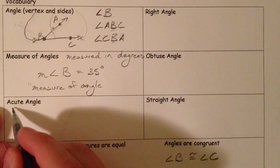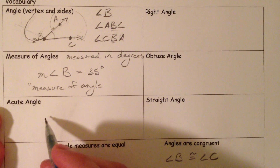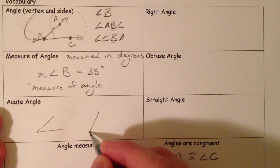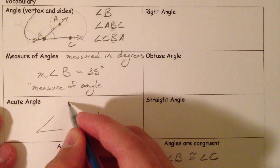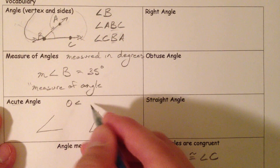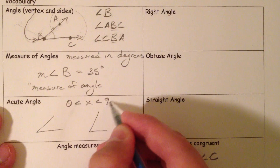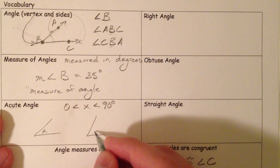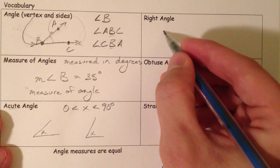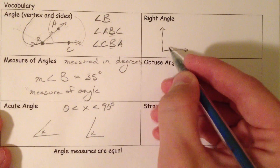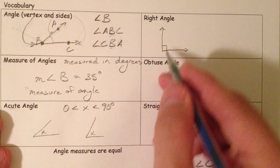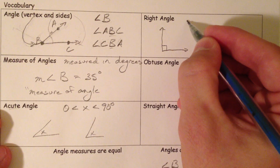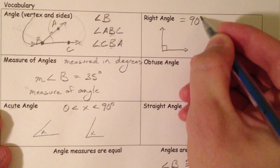We have a couple of special angles. An acute angle is a little, cute angle — anything less than 90 degrees, where it's bigger than zero and less than 90. Because if it's equal to 90, then you have a right angle. Right angles are represented with a little box in the corner so you can know it's right — if it doesn't have that box, you don't necessarily know it's a right angle.